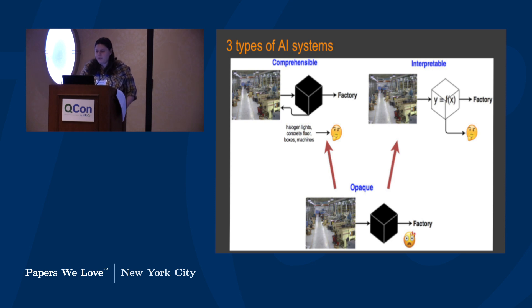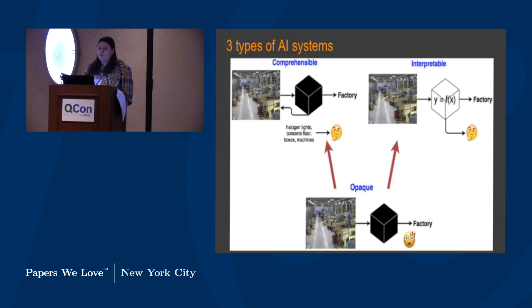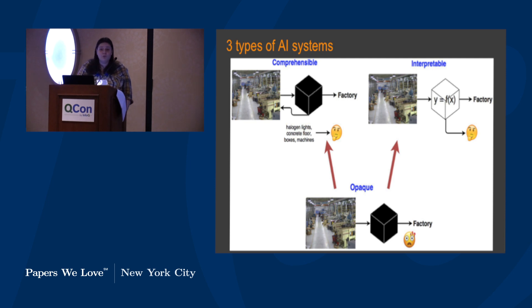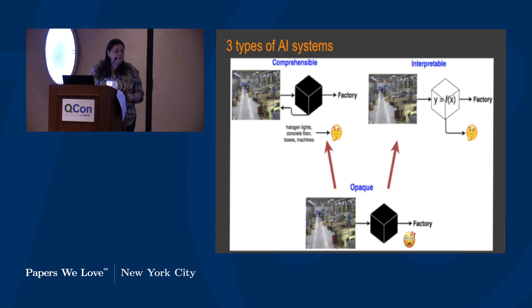The second type is interpretable systems — essentially a white box. You feed it a picture of the factory, it says it's a factory, and it also gives you the transformation function it uses to arrive at that conclusion. This is doable in linear systems like regression models. In SVMs, you can look at things like distance to the decision boundaries. But once your models become non-linear — especially going into neural networks — this becomes really difficult to impossible to do.